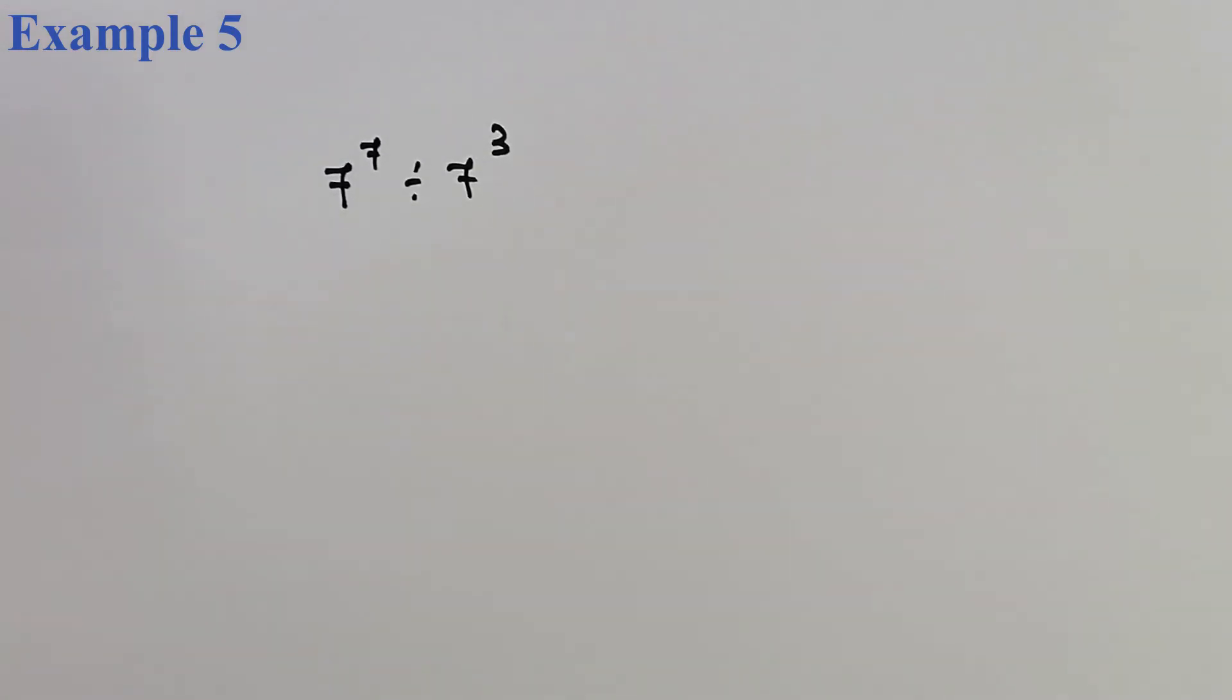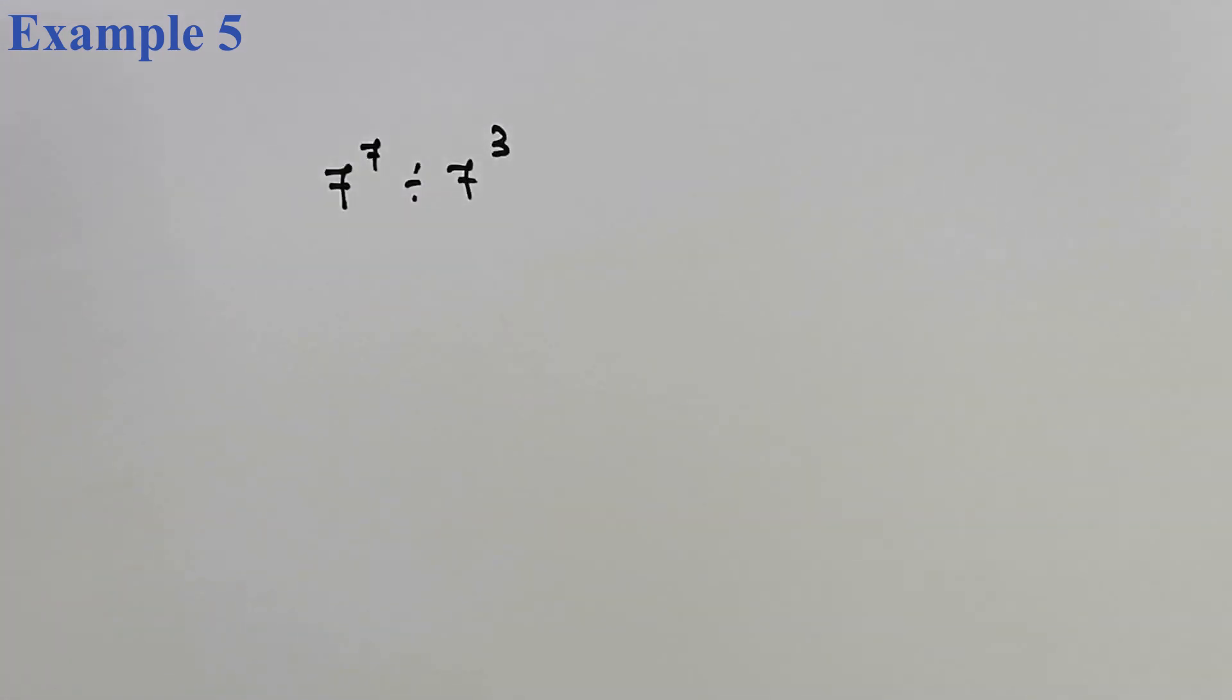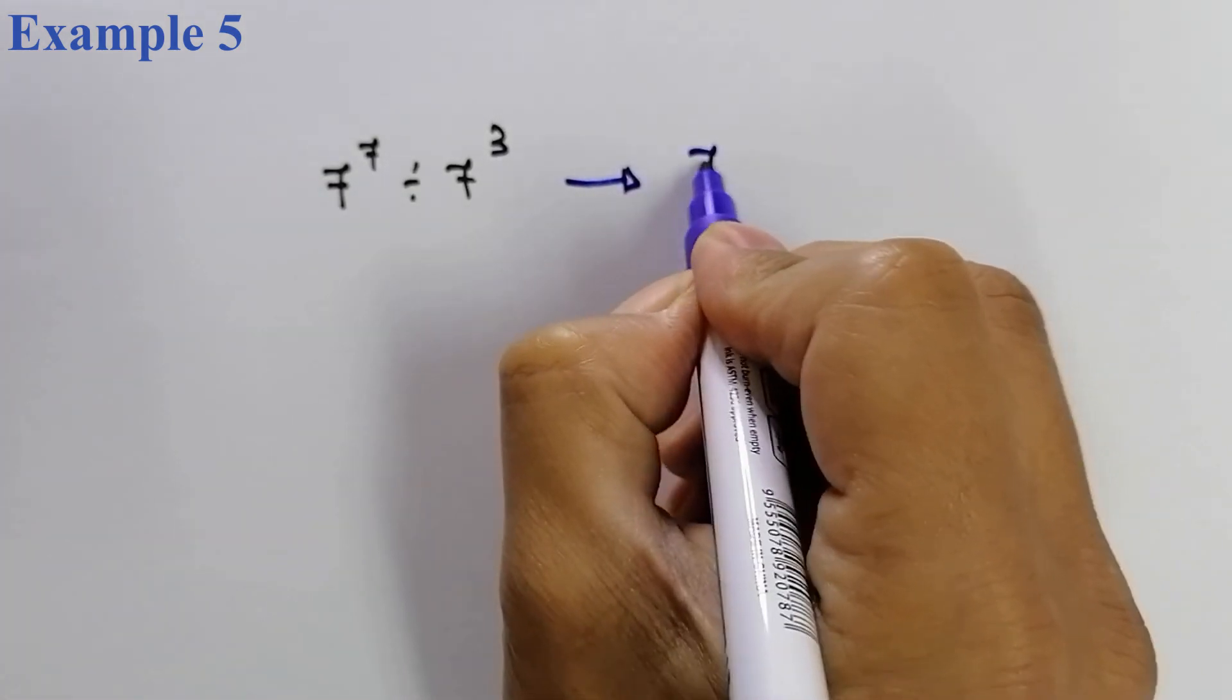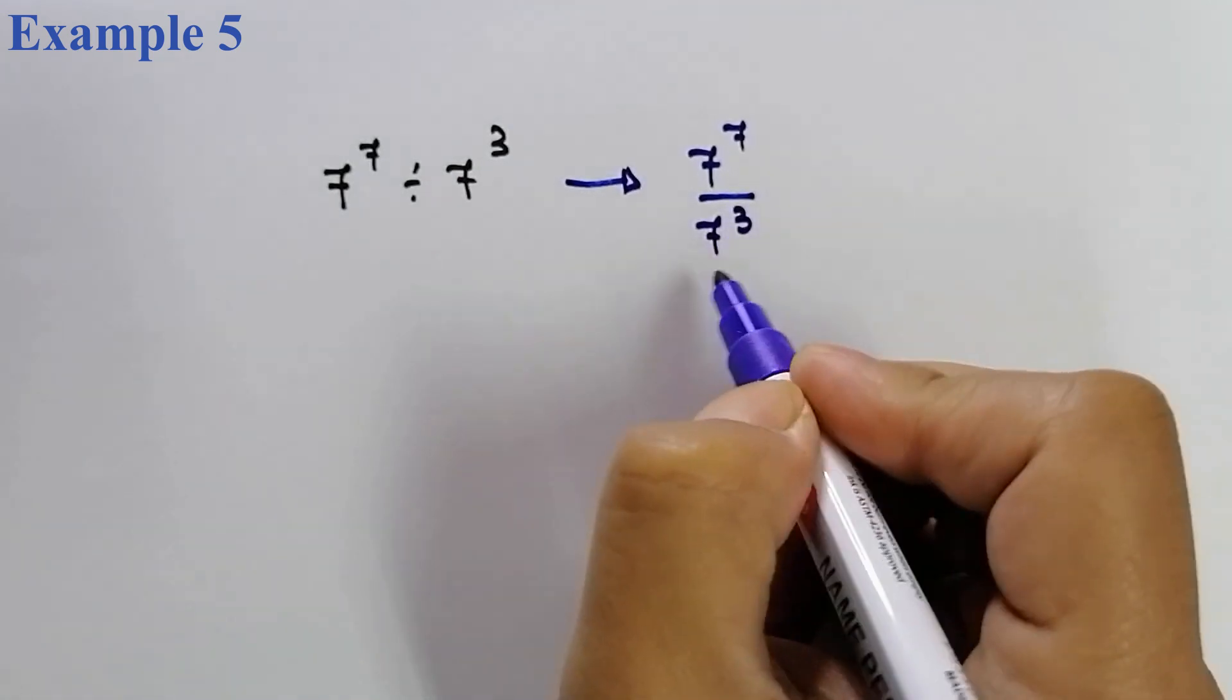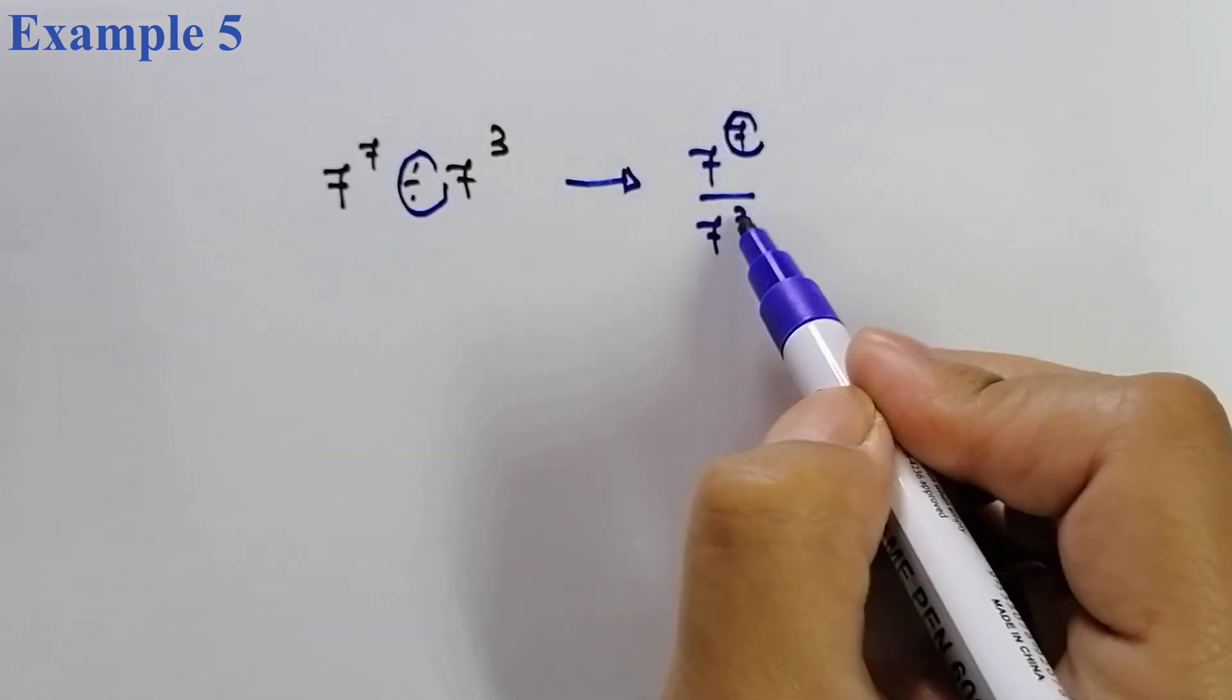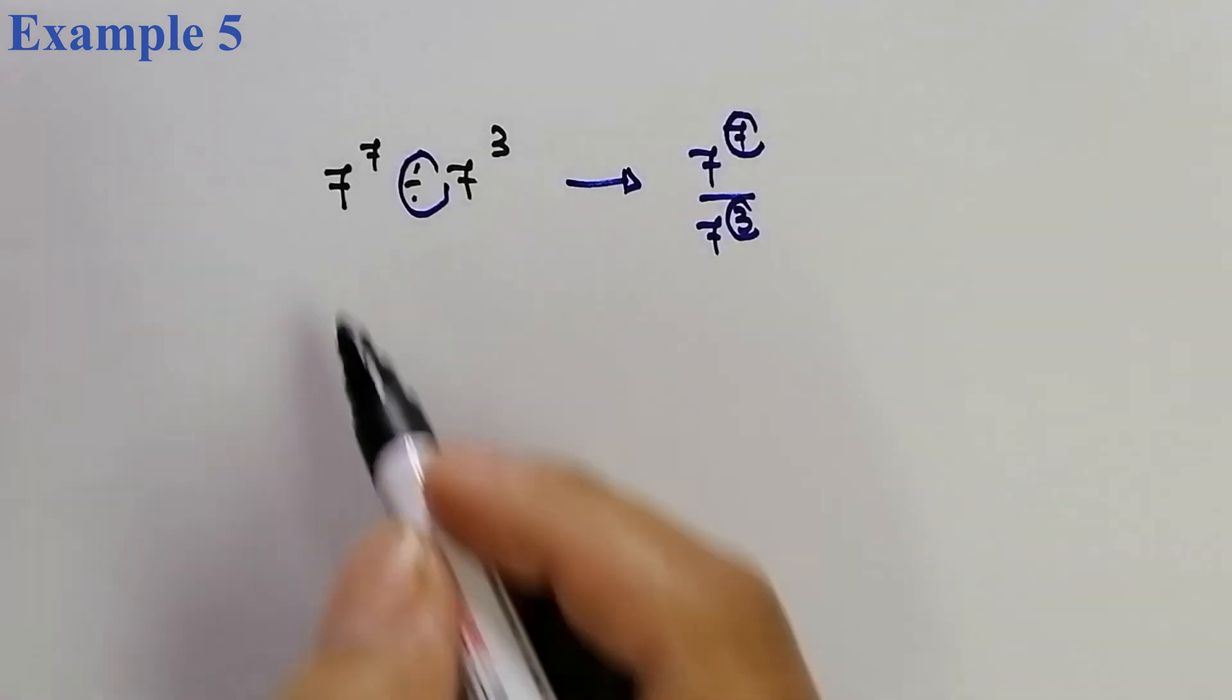Soalan yang ini juga merujuk kepada law of exponent yang pertama, yang kedua. 7 power of 7 divided by 7 power of 3. Dengan kata lain, kalau kita tulis untuk persamaan yang ini, kalau kita merujuk kepada rumus, ianya juga boleh tulis sebagai 7 power of 7 divided by 7 power of 3. Setiap kali kita lakukan division, power dia, exponent dia, kita akan lakukan substraction.